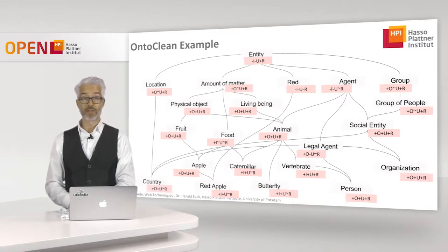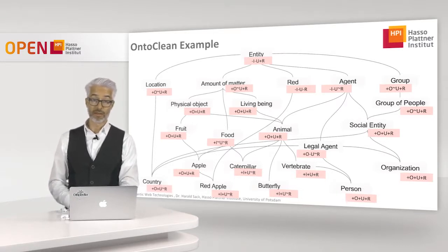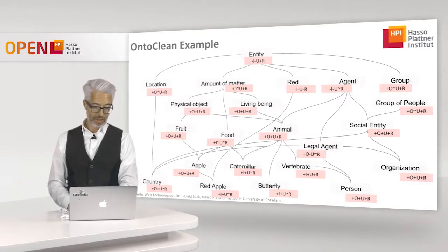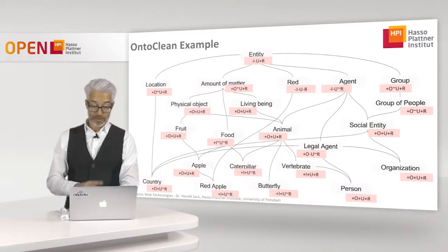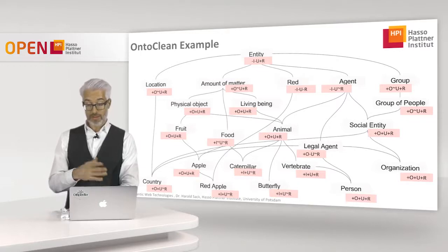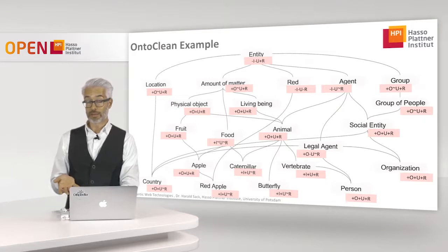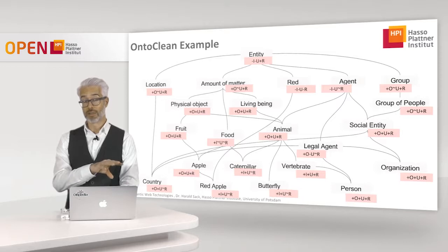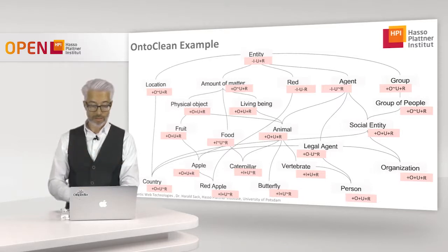For 'country': countries are identified by their name — new identity criterion. Countries are considered a whole. Regarding rigidity: if the social entity called a country ceases to exist, it is gone. But the geographic region — the location where the country is — stays on. Therefore country is anti-rigid, because being a country is not an essential criterion.